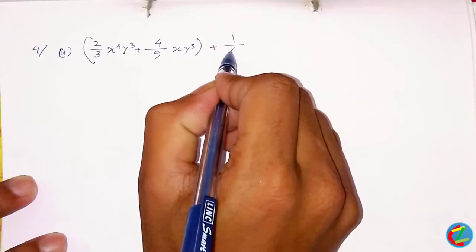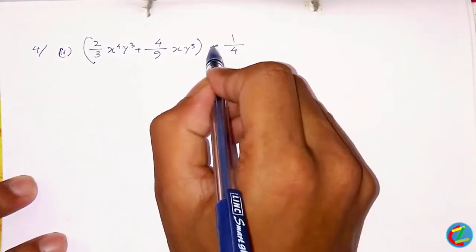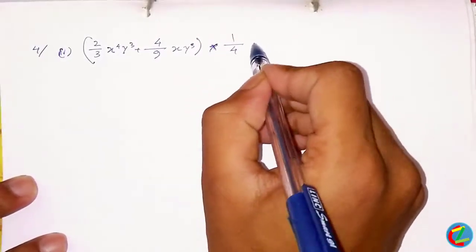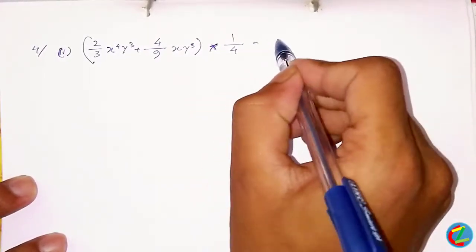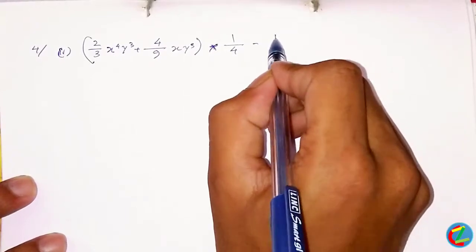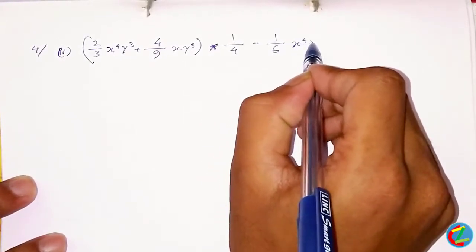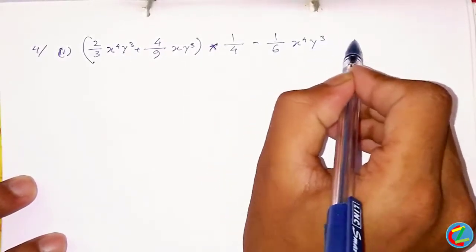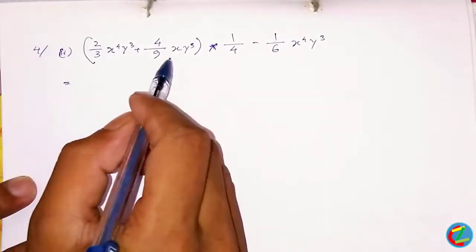The expression is: 2/3 x^(3/4) y^(2/3) plus 4/9 x y^(2/3), whole into 1/4 minus 1/6 x^(3/4) y^(2/3).